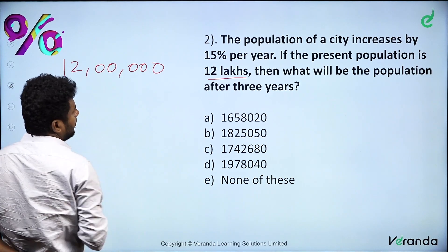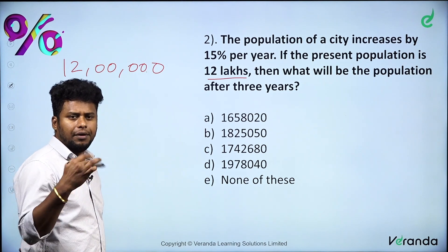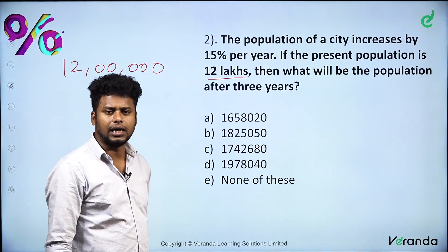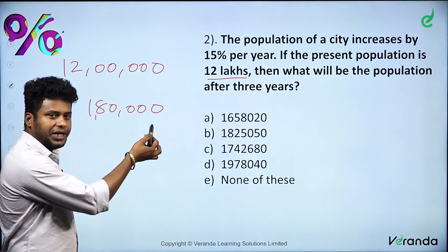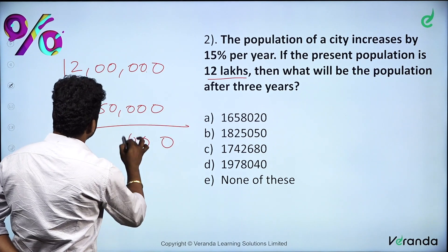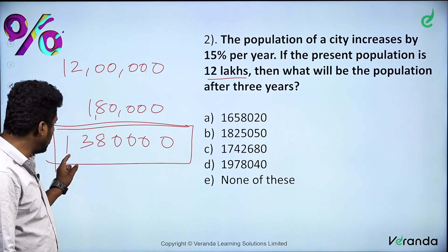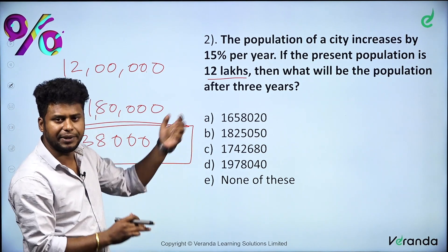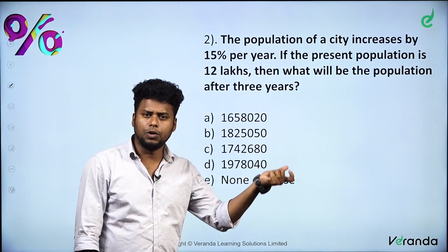First, if we try to add 15% increase step by step for 3 years conventionally, it will consume a lot of time. You can solve it using the compound interest formula, and you will get an answer. But instead of doing this, we have a short trick — the 3-3-1 method. Don't use the conventional step-by-step method; it takes too long.